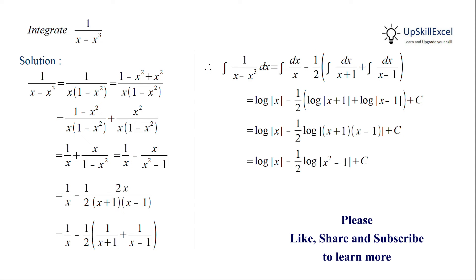Here we have half as coefficient of the logarithmic term, so this can be taken inside and converted into a power. We will get log of absolute of under root of x square minus 1.